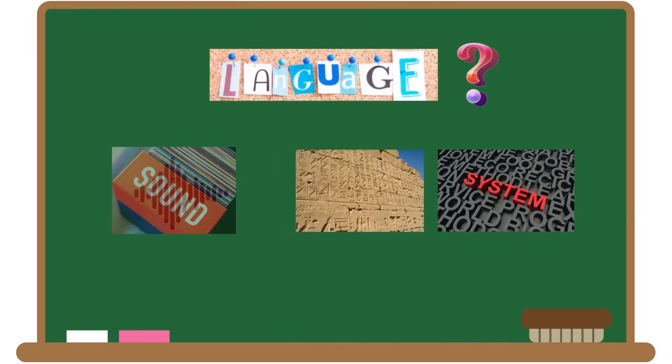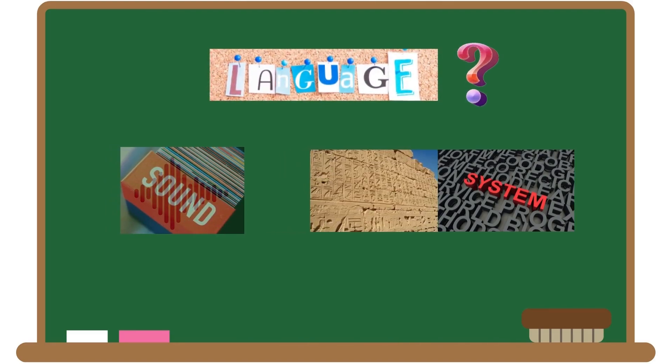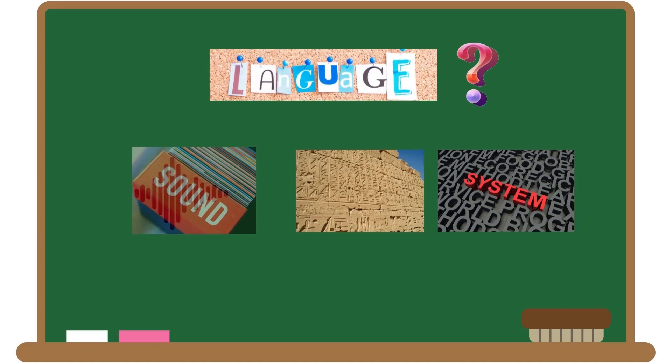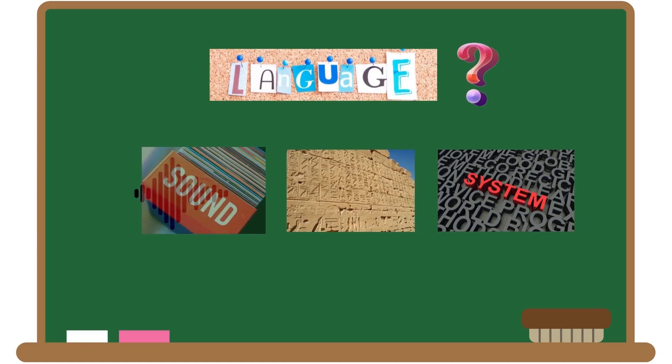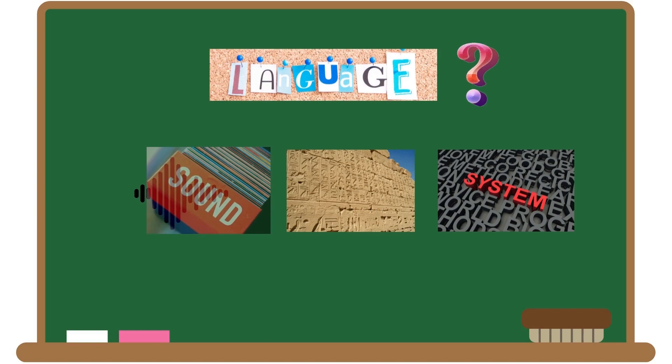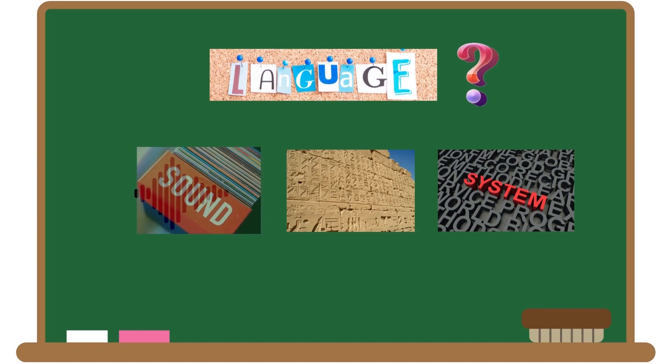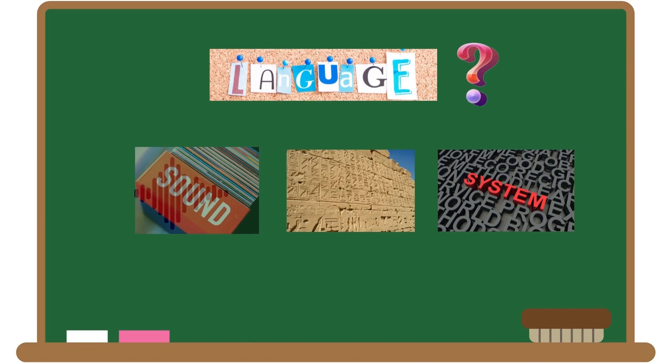What is language? Language is a systematic means of communicating by the use of sounds or conventional symbols. It is the code humans use as a form of expressing themselves and communicating with others. It may also be defined as a system of words used in a particular discipline.